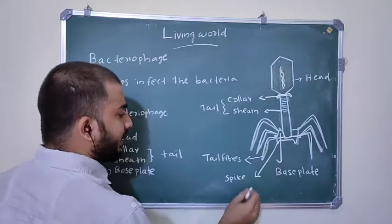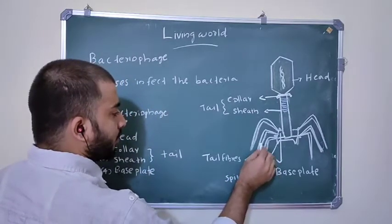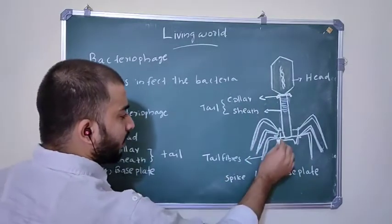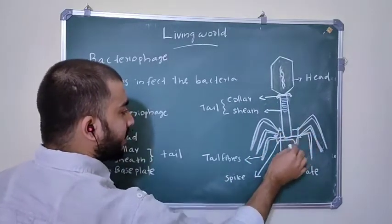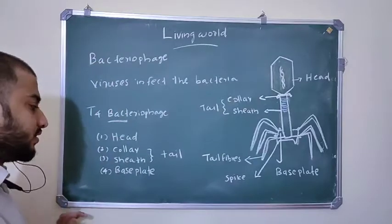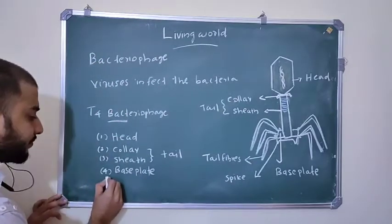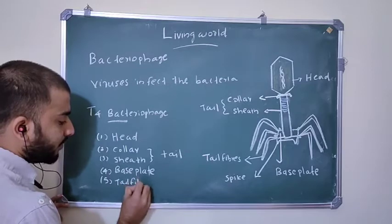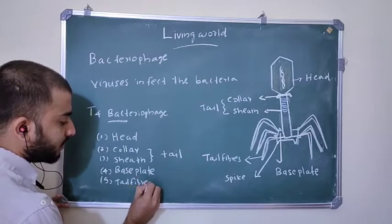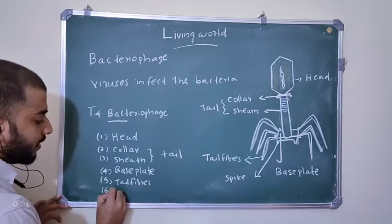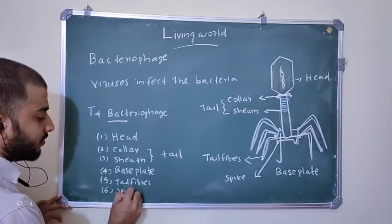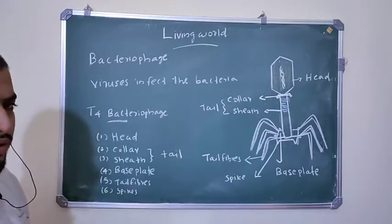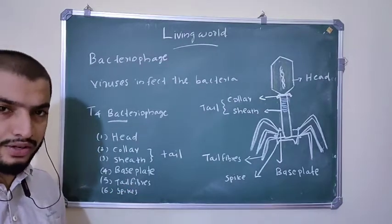If you observe the base plate, you can see other structures — tail fibers and spikes. There are a total of six tail fibers and six spikes present on the base plate. This is the complete structure of a T4 Bacteriophage.